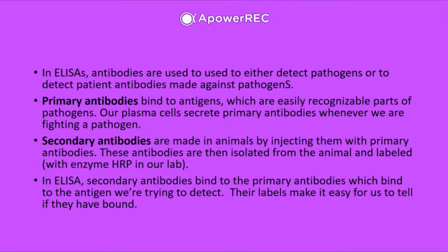ELISAs — enzyme-linked immunosorbent assays — are assays used to check if a patient has antibodies for a particular pathogen or to detect the presence of a pathogen. The way it works: there is a primary antibody, a secondary antibody, and a detection method linked to the secondary antibody. The primary antibodies are obtained from the patient; if the patient has been exposed to a pathogen, they should have antibodies against it.